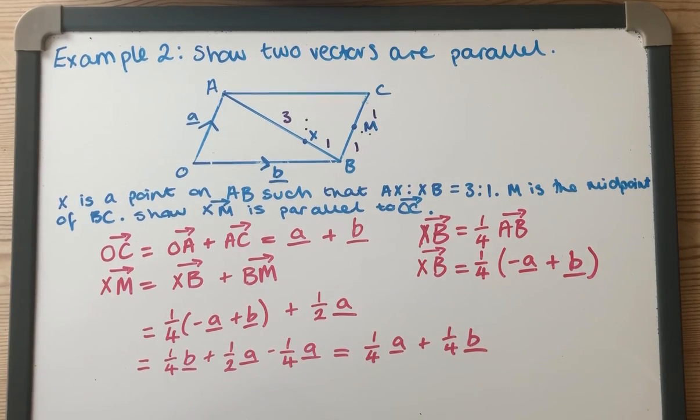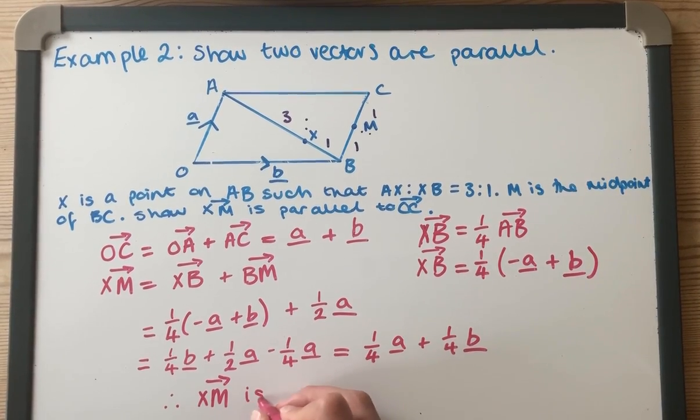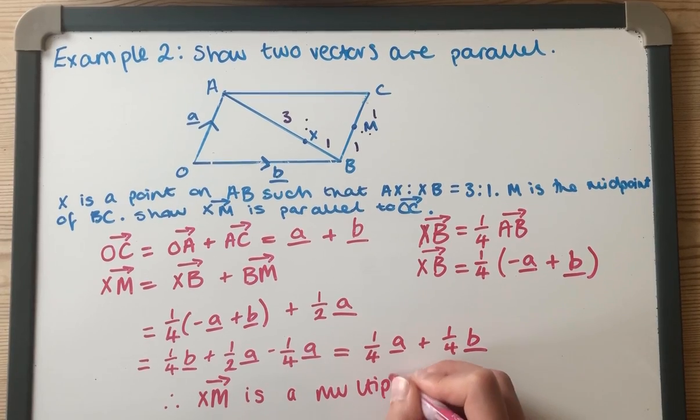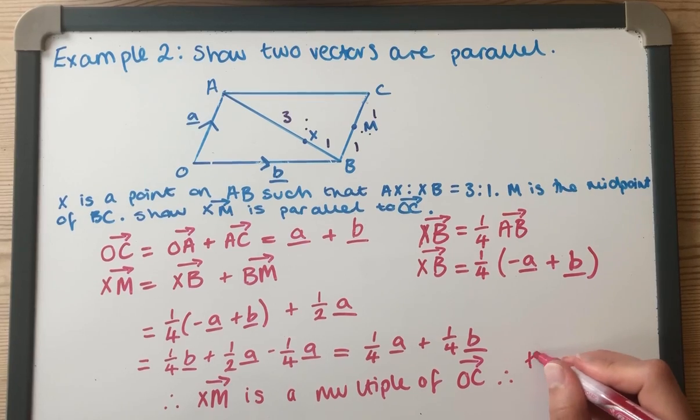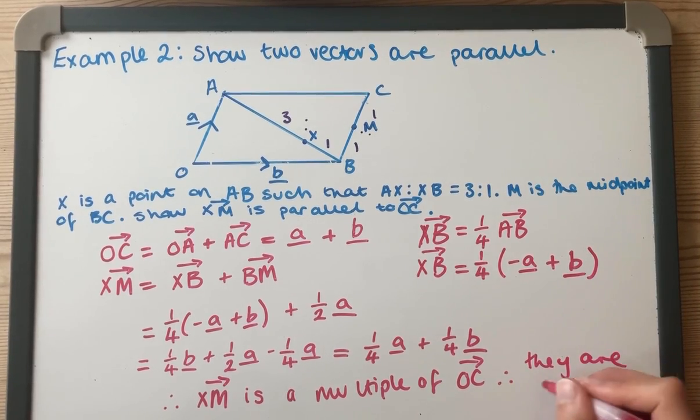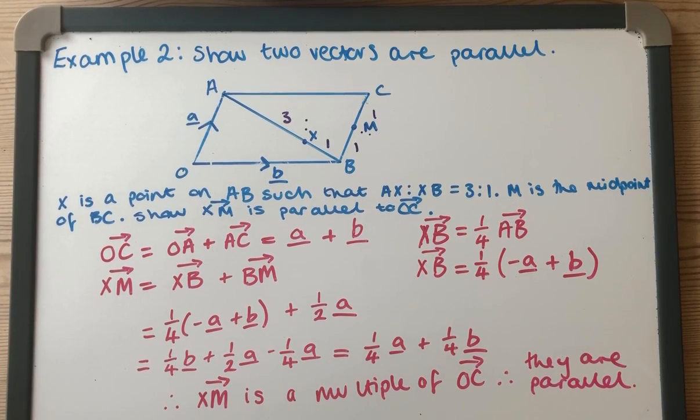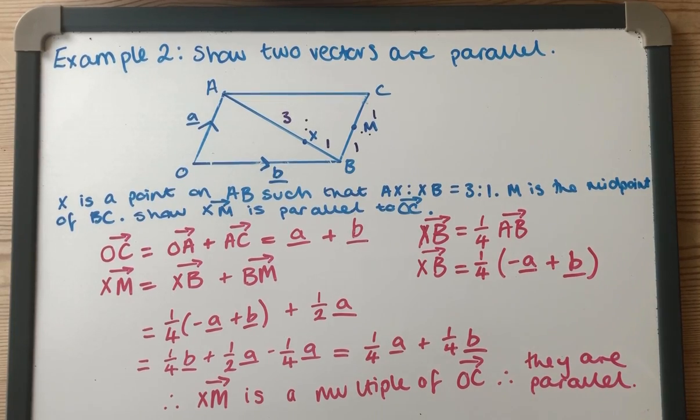Now we've got OC is A plus B, and XM is a quarter of A plus a quarter of B. They are very clearly multiples of each other. Therefore XM is a multiple of OC, therefore they are parallel. I hope that's helpful. Check out the third video which is about showing things are on a straight line.